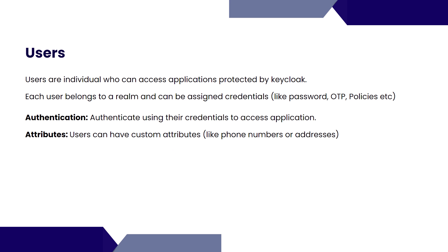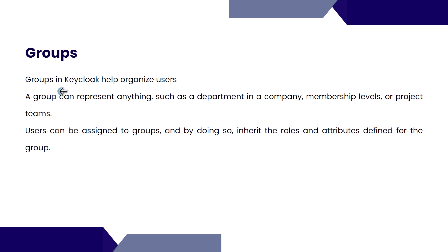Next is about groups. In Keycloak, groups help to organize users. A group can represent a department, a membership level, or project teams. Users assigned to a group inherit the roles and attributes defined for that group. This makes your life easier — you can categorize users into a group, then assign a role to that group instead of going to each user individually to change roles or add attributes.